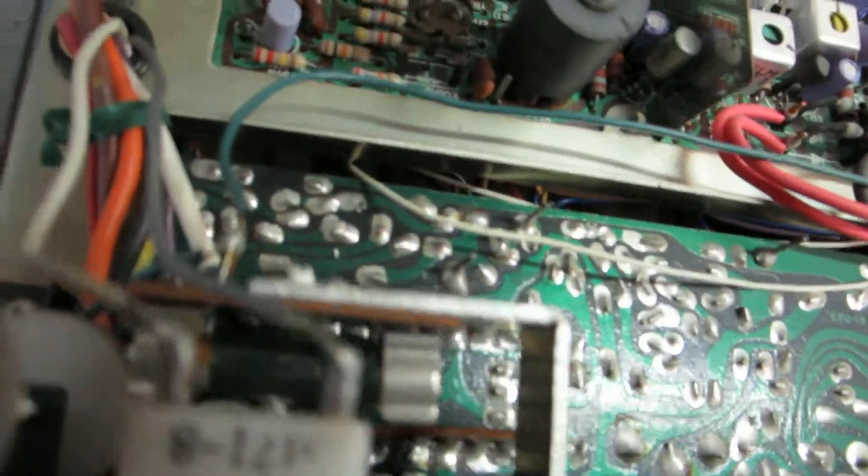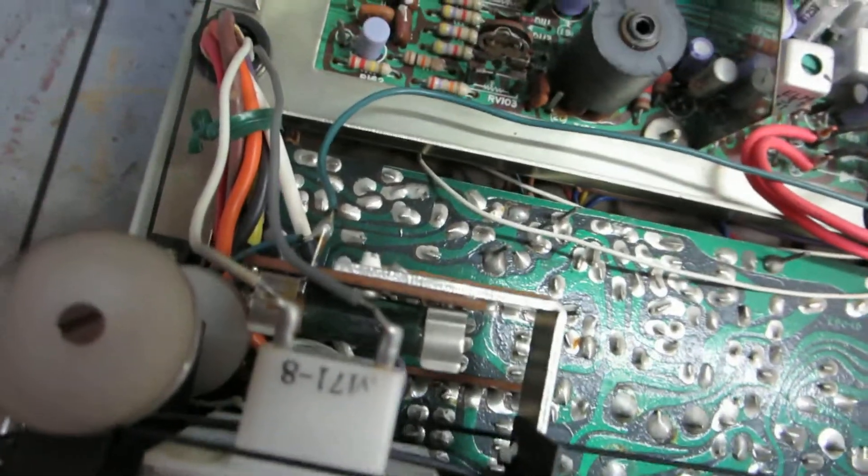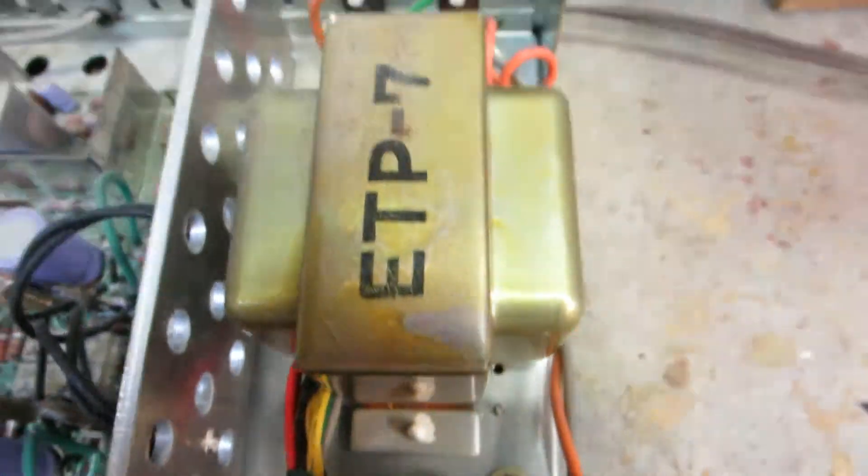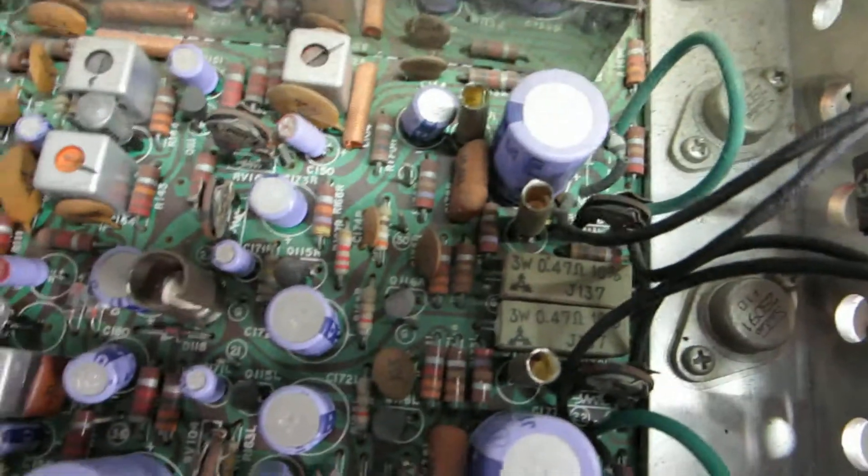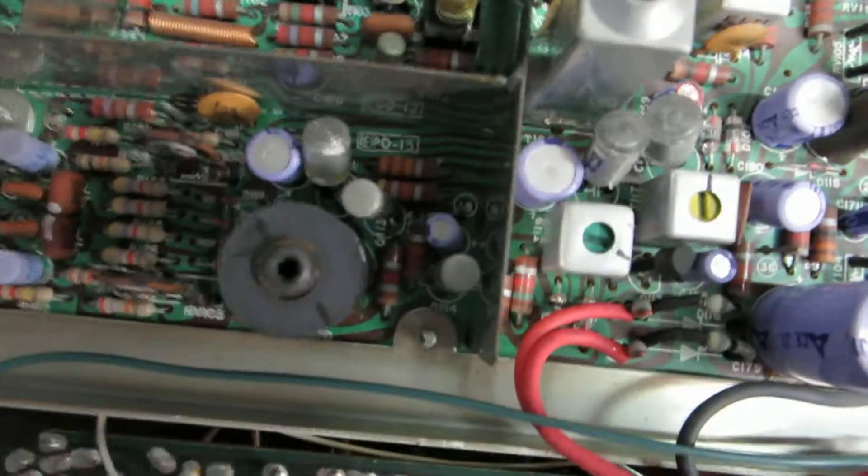Well, doesn't look like there's hardly any access to that bulb. If there is a bulb. Looks like there is. But this is what the inside of this receiver looks like. Except everything's all dusty. I'm gonna see. I'm gonna vacuum this all out.